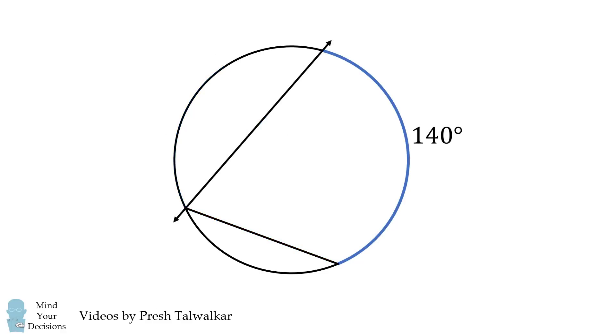Similarly, for the other arc, we've constructed an inscribed angle of the circle. Therefore, the measure of this angle will be equal to 70 degrees.